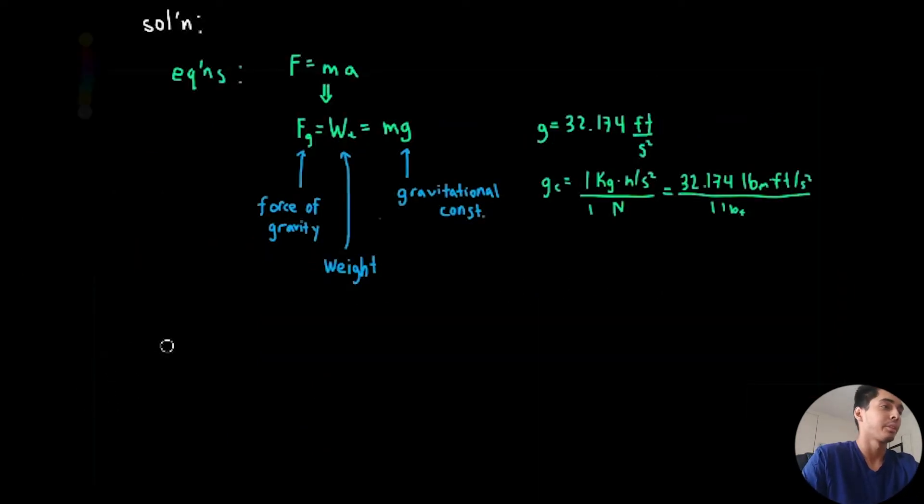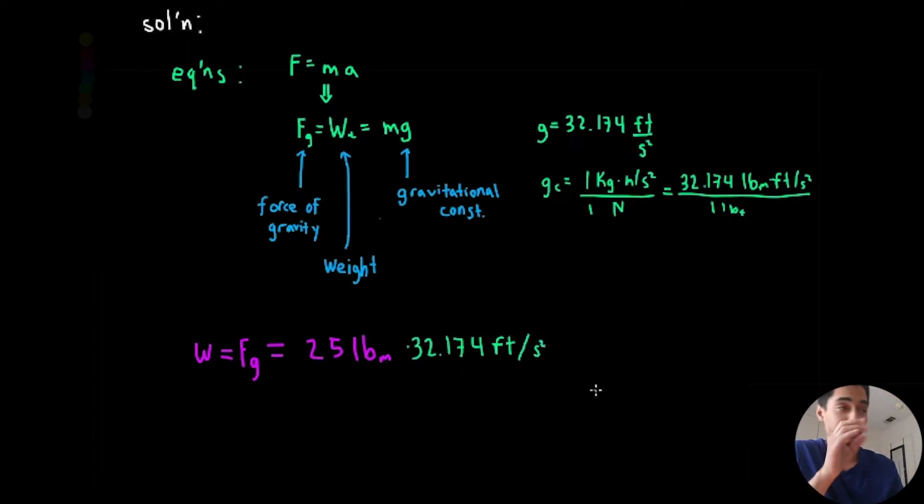So we want to calculate the weight in pounds-force. Weight is force of gravity, it's mass times acceleration. Our mass is 25 pound mass, and now we're going to multiply it by gravity, the gravitational constant, which is 32.174 feet per second squared. It seems like we're done but we're actually not even close. No just kidding.